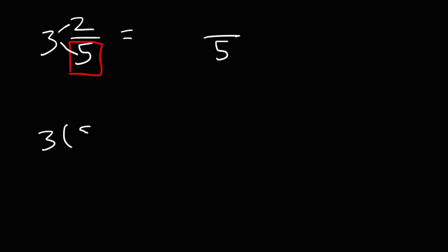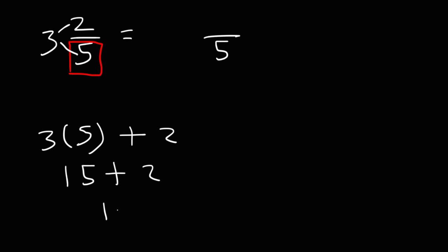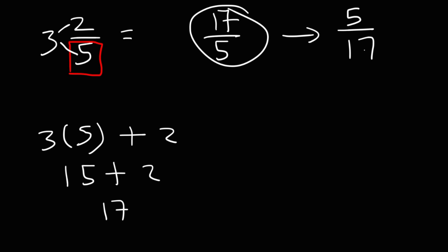So that's 3 times 5 plus 2. 3 times 5 is 15, and 15 plus 2 is 17. That's how you convert a mixed number into an improper fraction. Now once you have the improper fraction, you can flip it to get the reciprocal. So the reciprocal is going to be 5 over 17, and that's the answer.